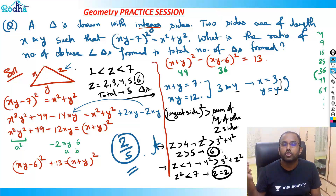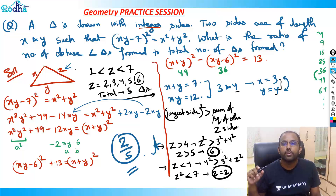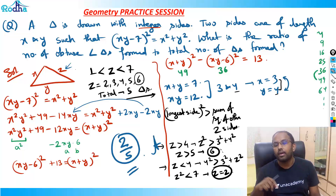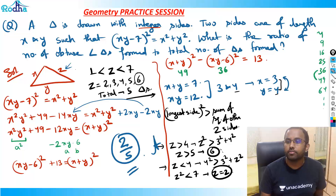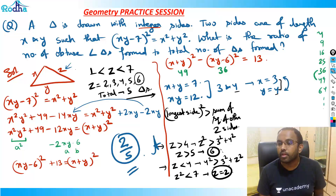This is an algebra, numbers, and geometry combined question — exactly the kind of question CAT always expects. Let's do one more question now.